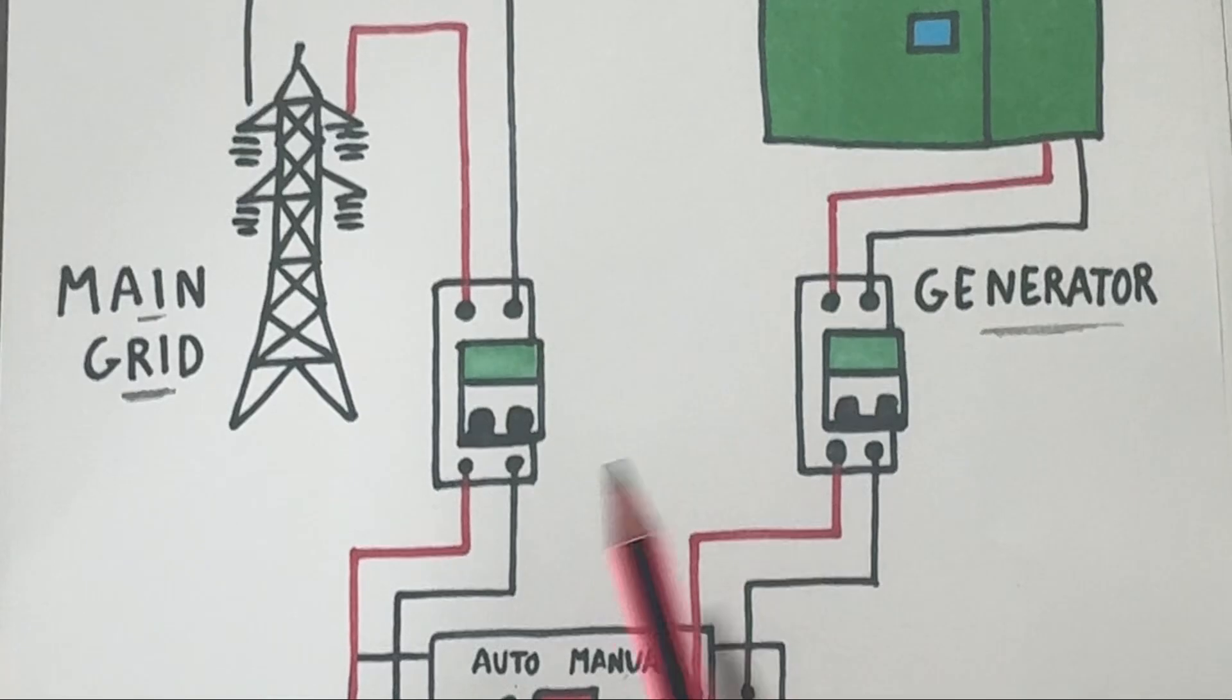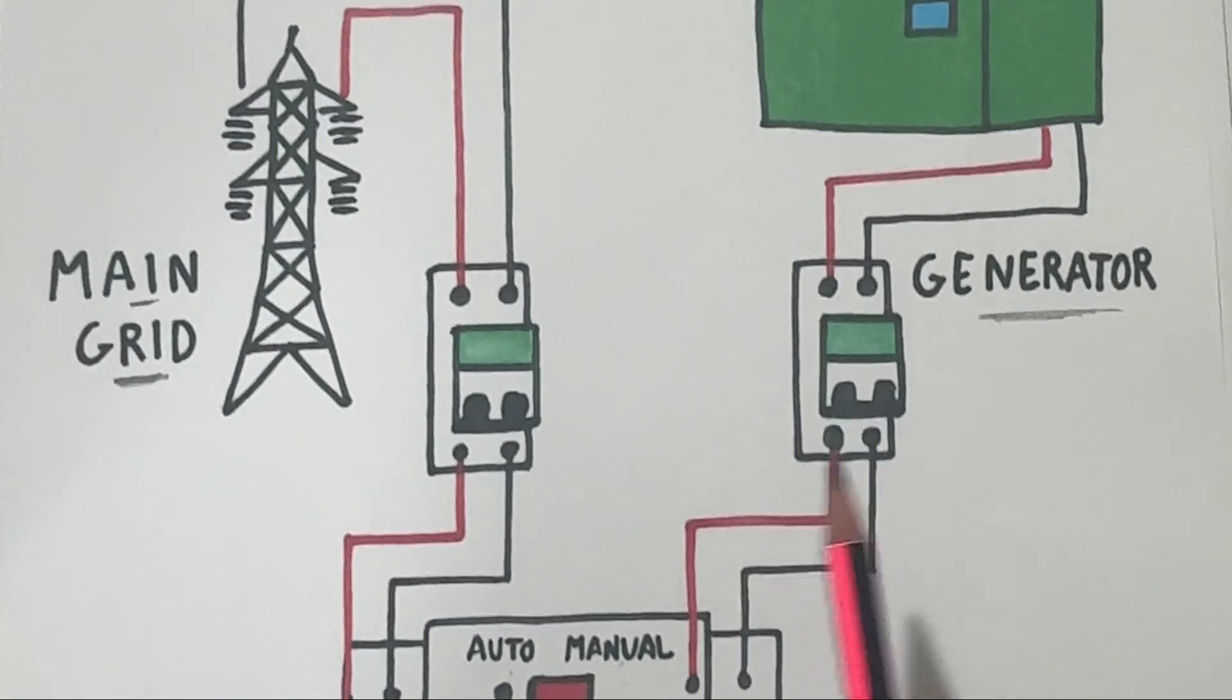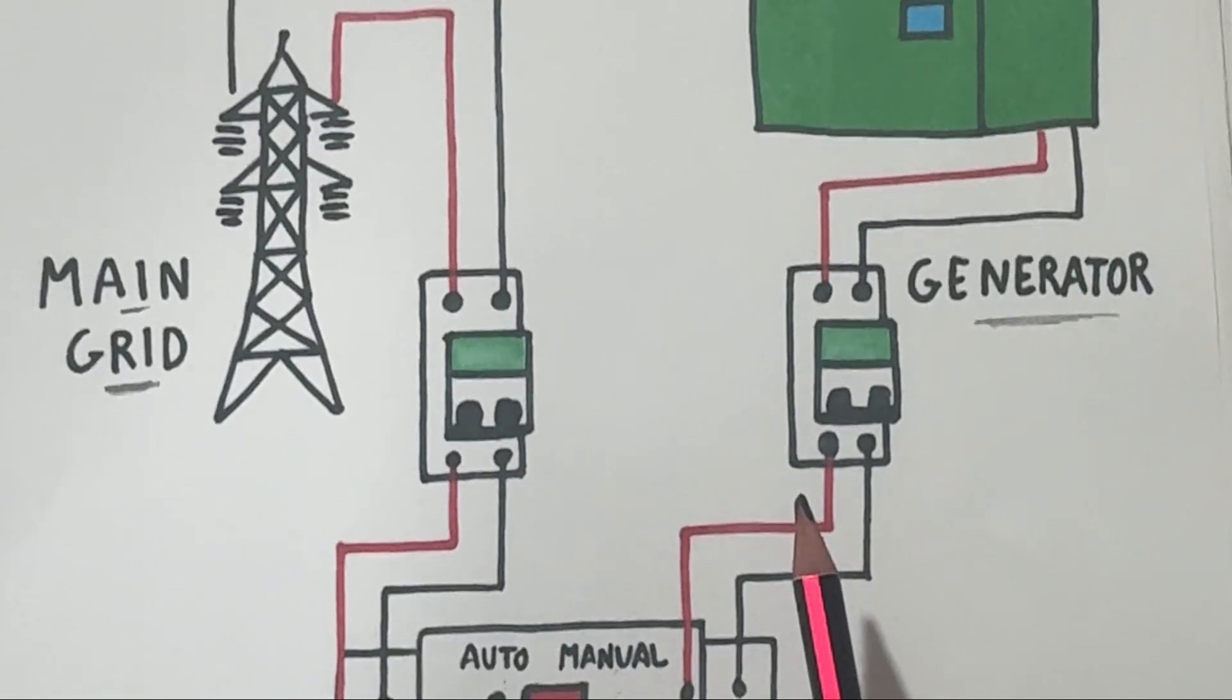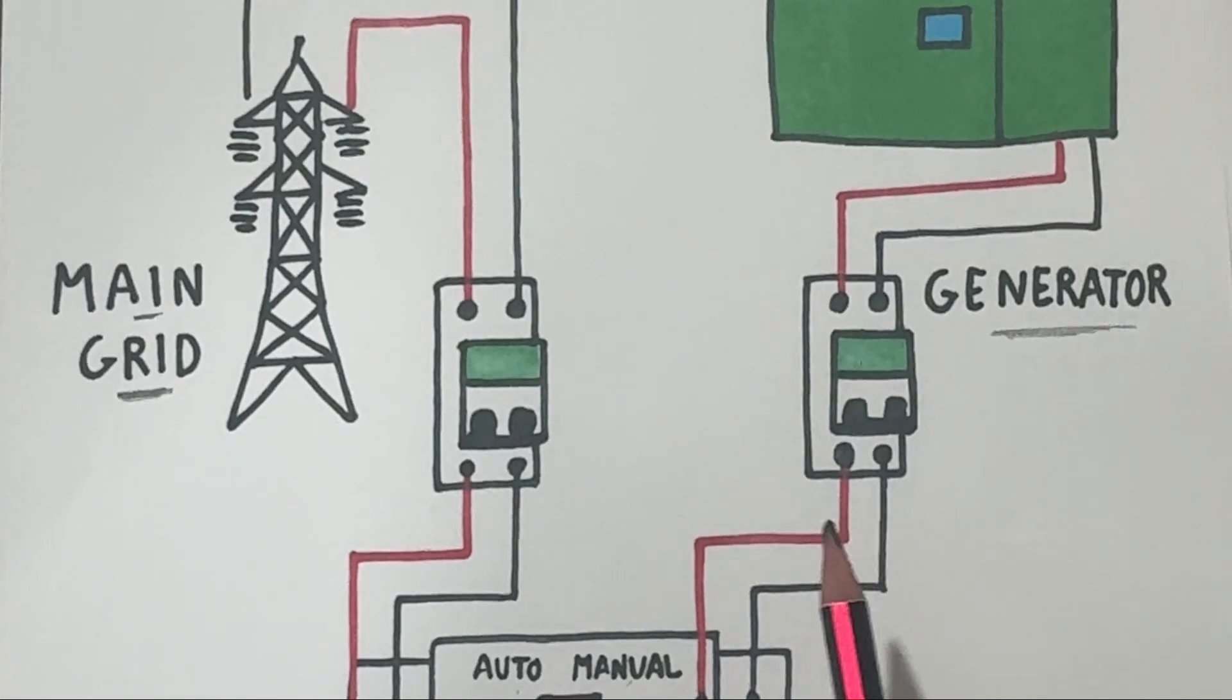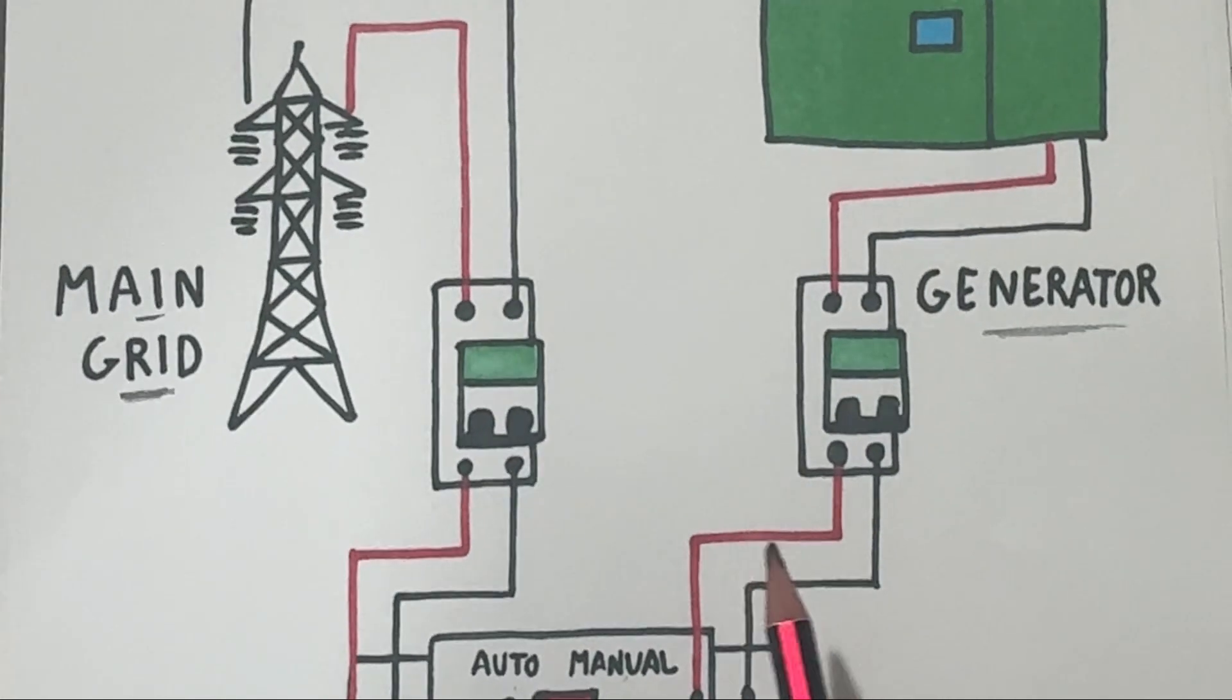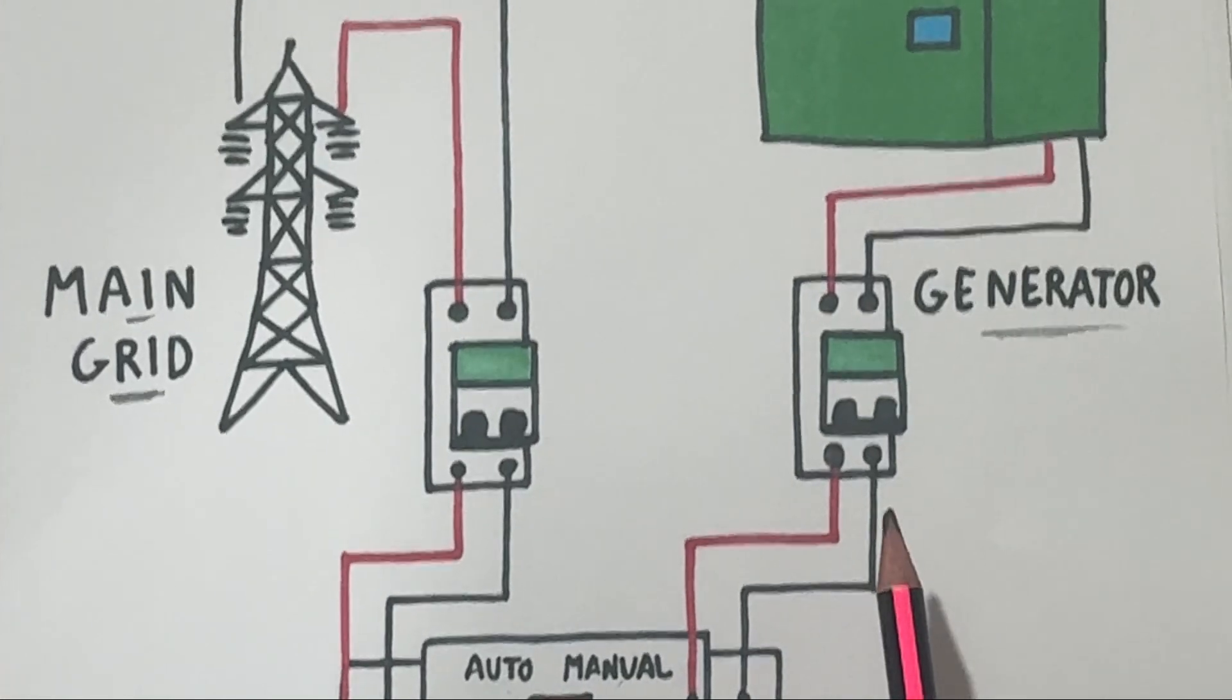When the grid power fails, the generator automatically starts up and the ATC transfers the load to the generator so that your house or system continues running without interruption.